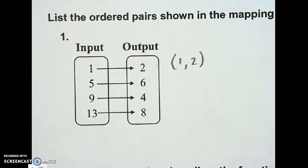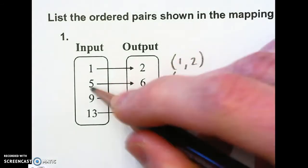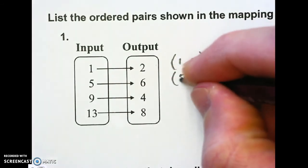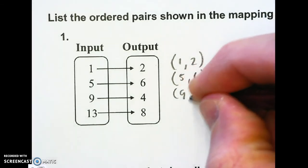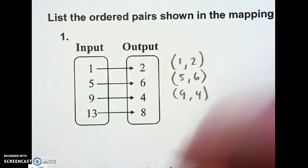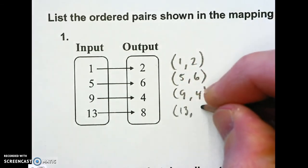I'm going to write the next coordinate pair. Whatever the arrow points to is the coordinate pair. So 5 comma 6 and then 9 comma 4 and 13 comma 8.